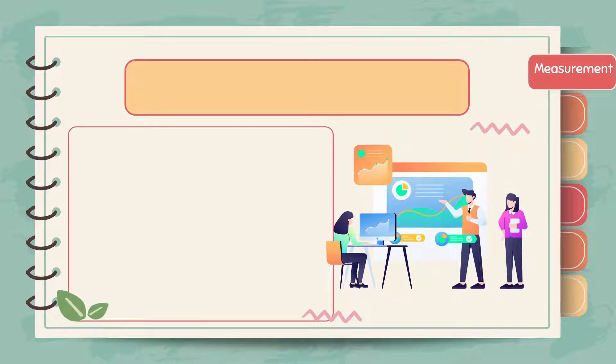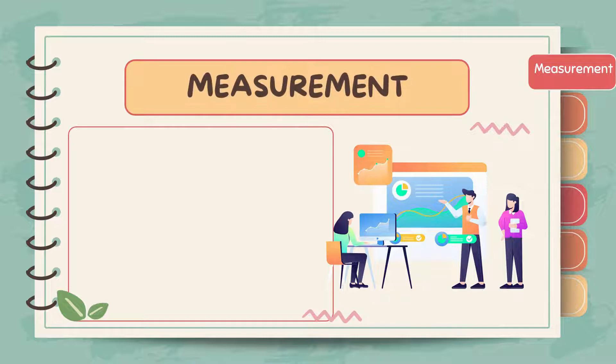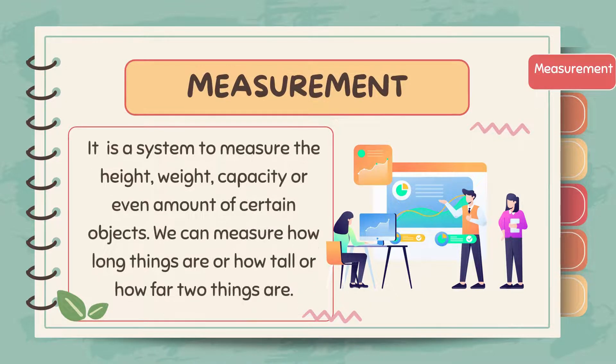First, let's find out what measurement is. It is a system to measure the height, weight, capacity, or even amount of certain objects. We can measure how long things are, how tall, or how far apart two things are.